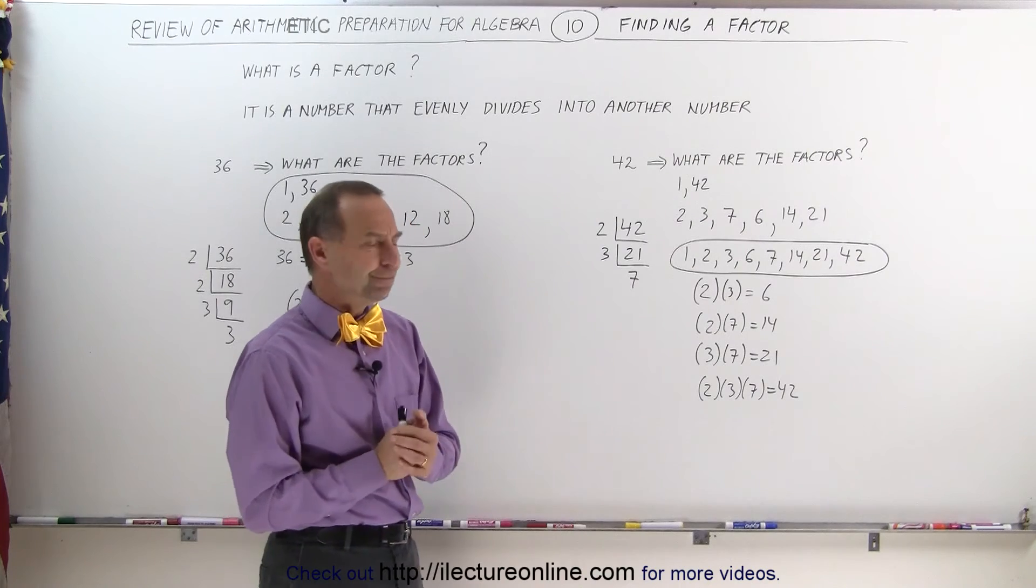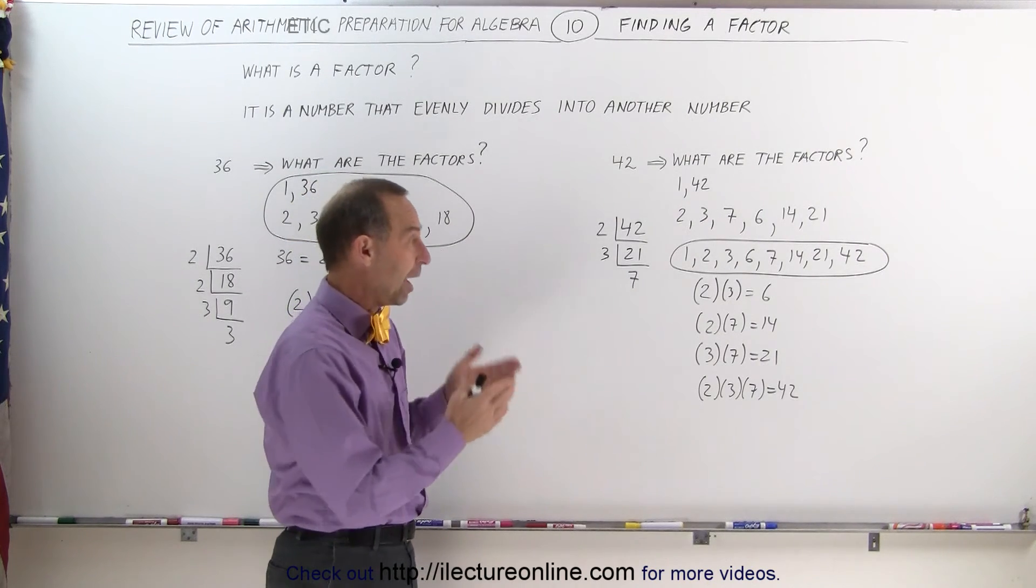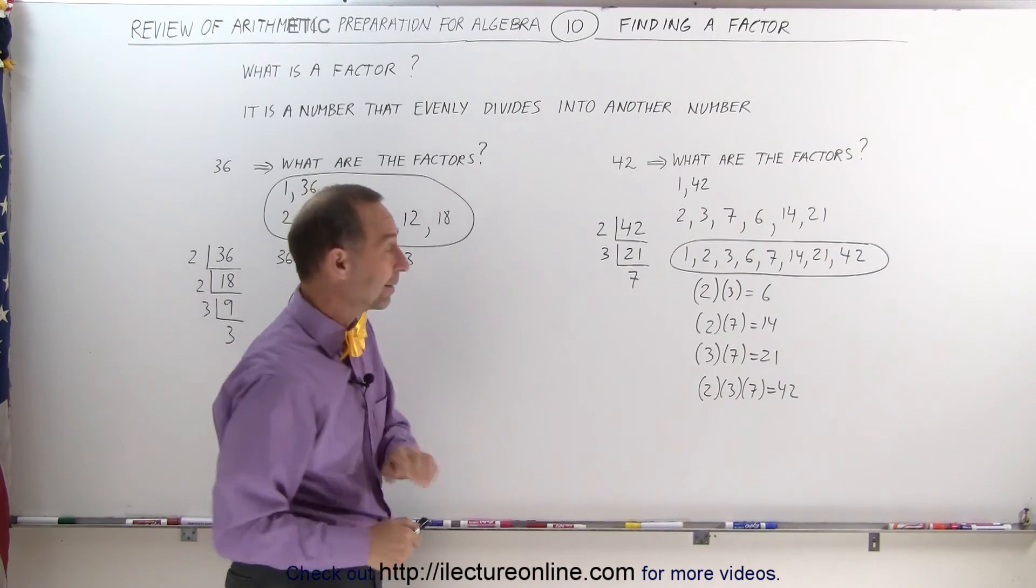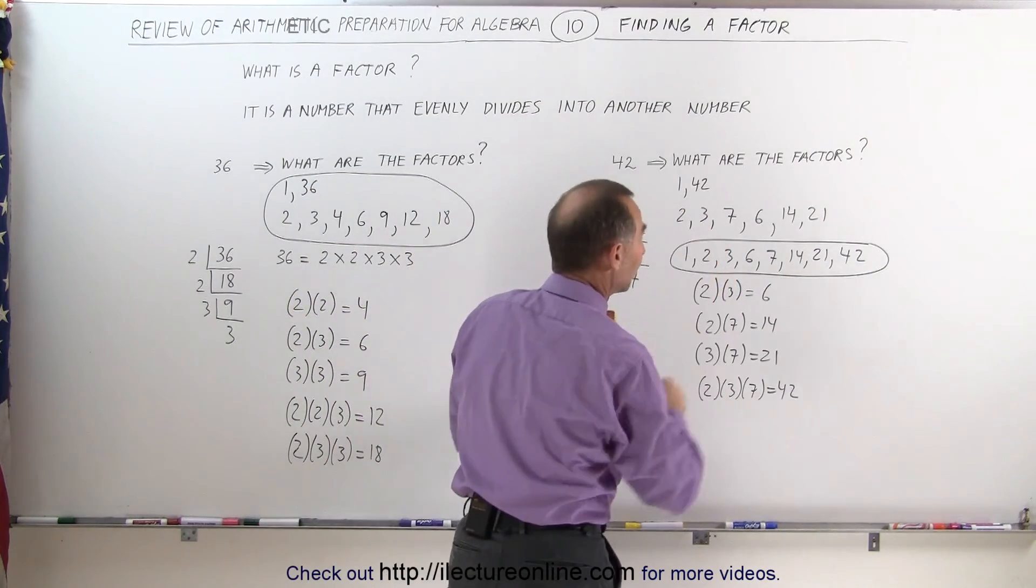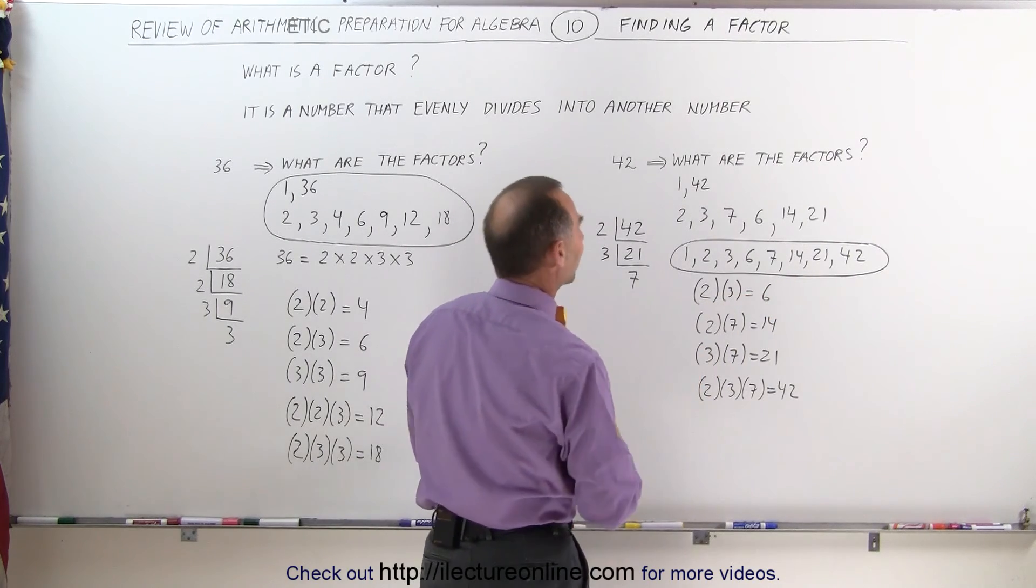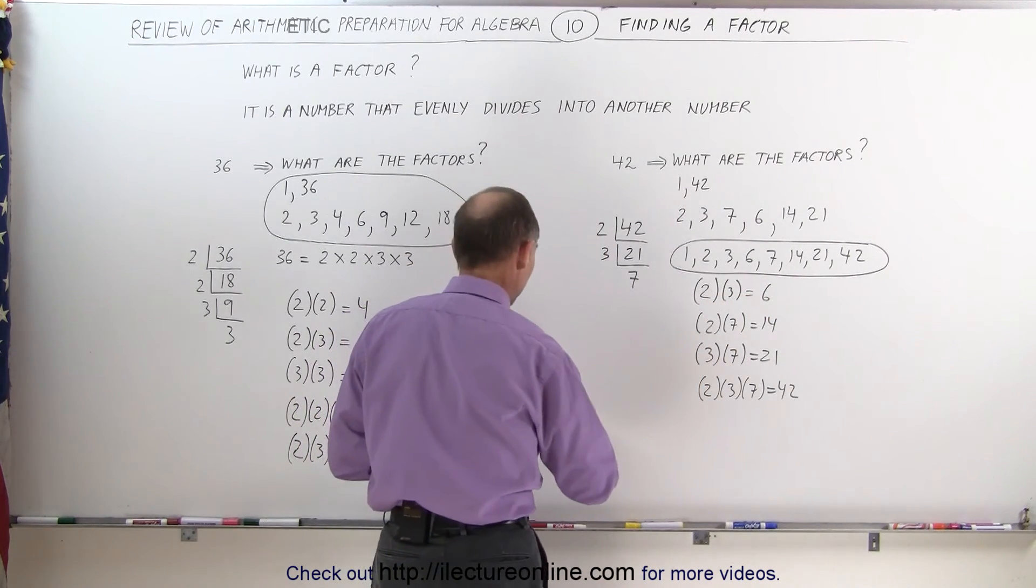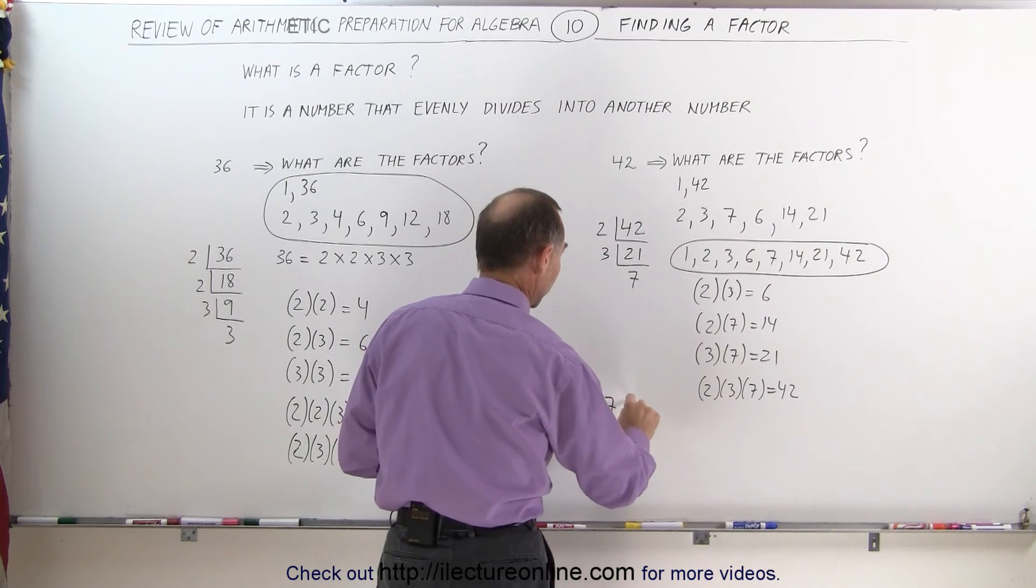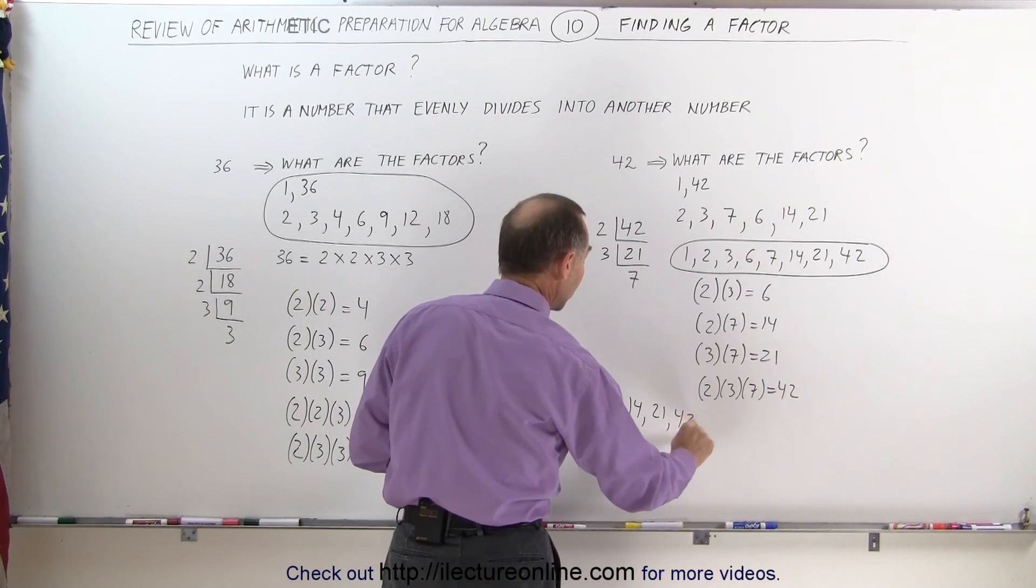You may wonder, what if I forgot one of the factors? How does the check tell me that I forgot one? Well, let's try that. Let's say that we forgot the 6. Somehow we did not do this multiplication, and we forgot the number 6. Let's see what we end up with: 1, 2, 3, 7, 14, 21, and 42.